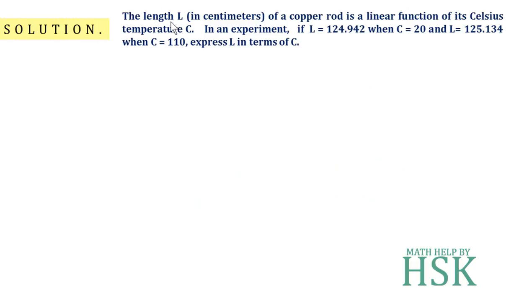The question clearly says that the length L is a variable that is a linear function of the Celsius temperature C. When C equals 20, L equals 124.942, and similarly for the other value. We have to express L in terms of C. Since L is a linear function of C, we start this question by expressing an equation of a line.